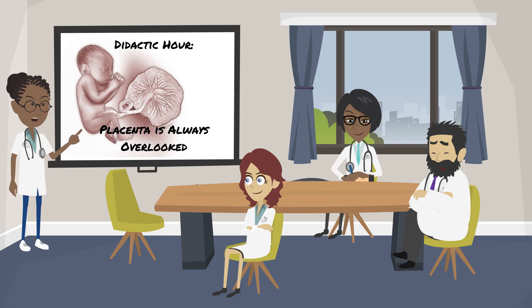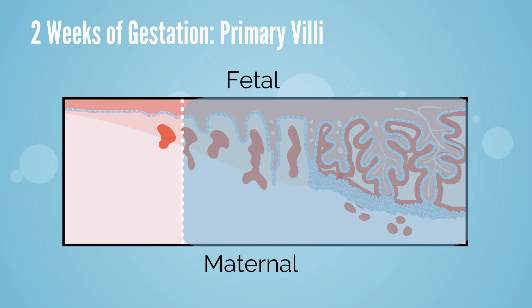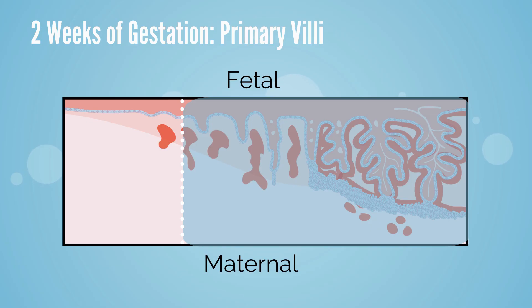Before you can appreciate obstetrics, you need to understand the development of the placenta, the most overlooked part of pregnancy. During the second week of gestation, the primary villi develop, which is the first stage of placental formation. The trophoblastic stem cells — the outer syncytiotrophoblast and the inner cytotrophoblasts — form finger-like extensions into the maternal decidua, also known as the maternal uterine wall.